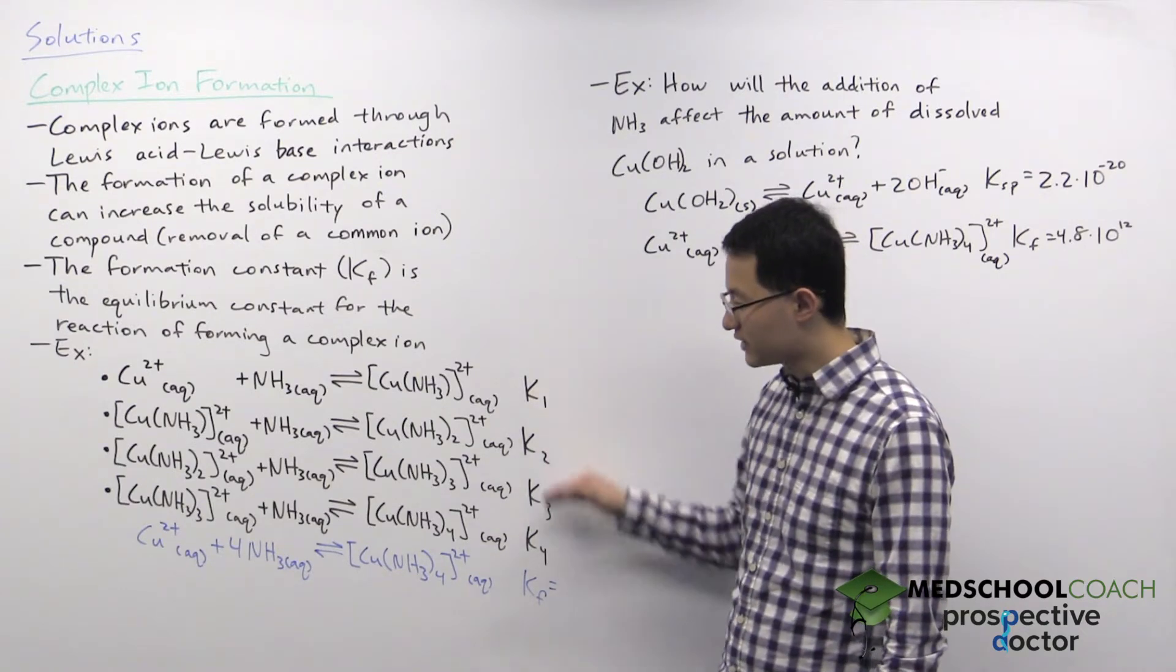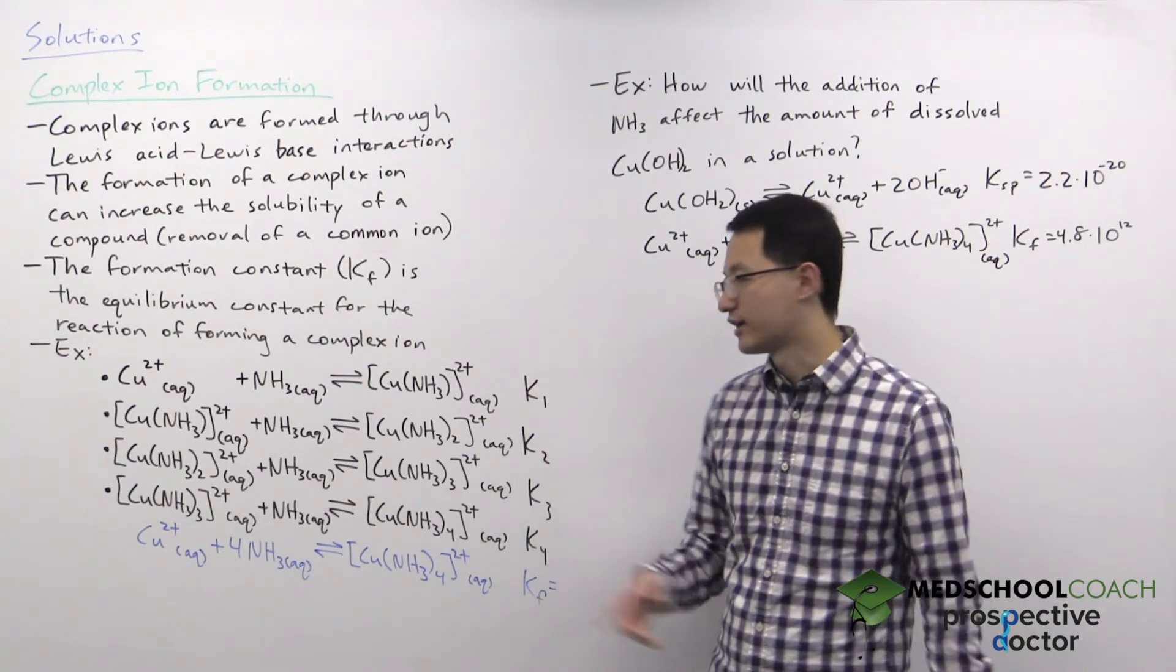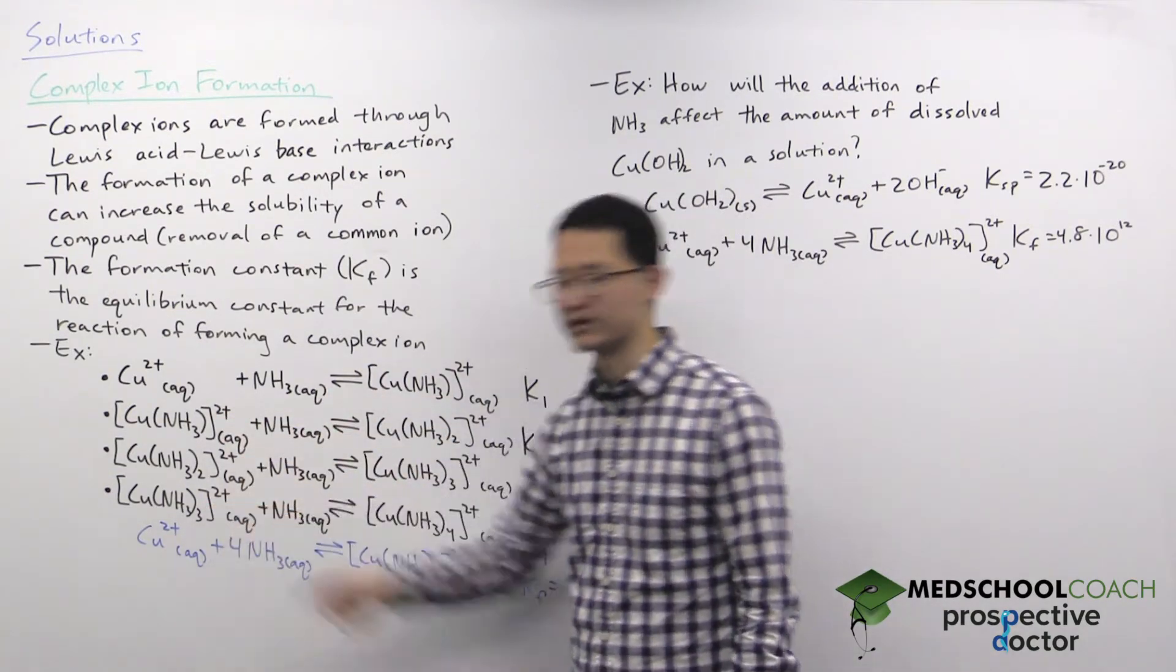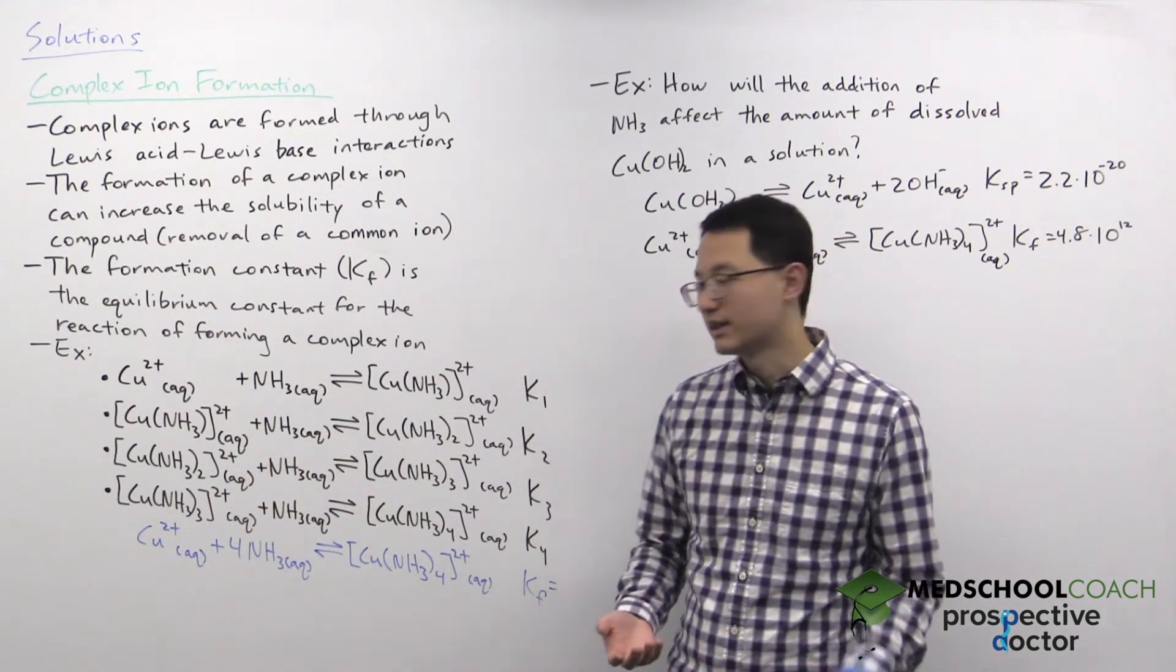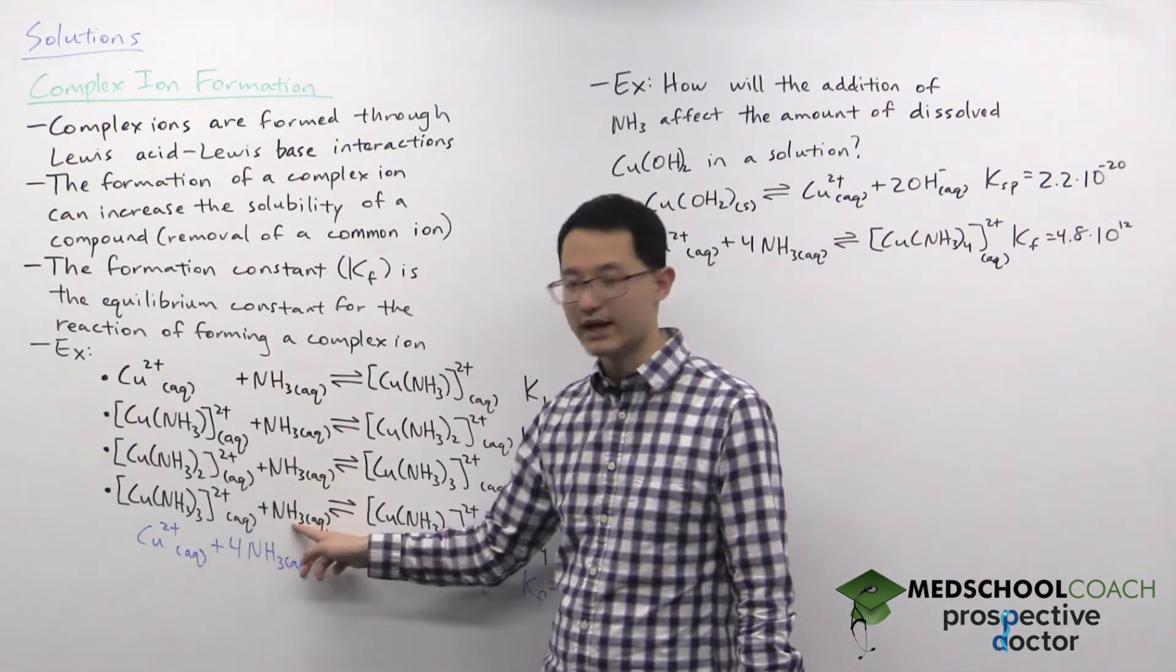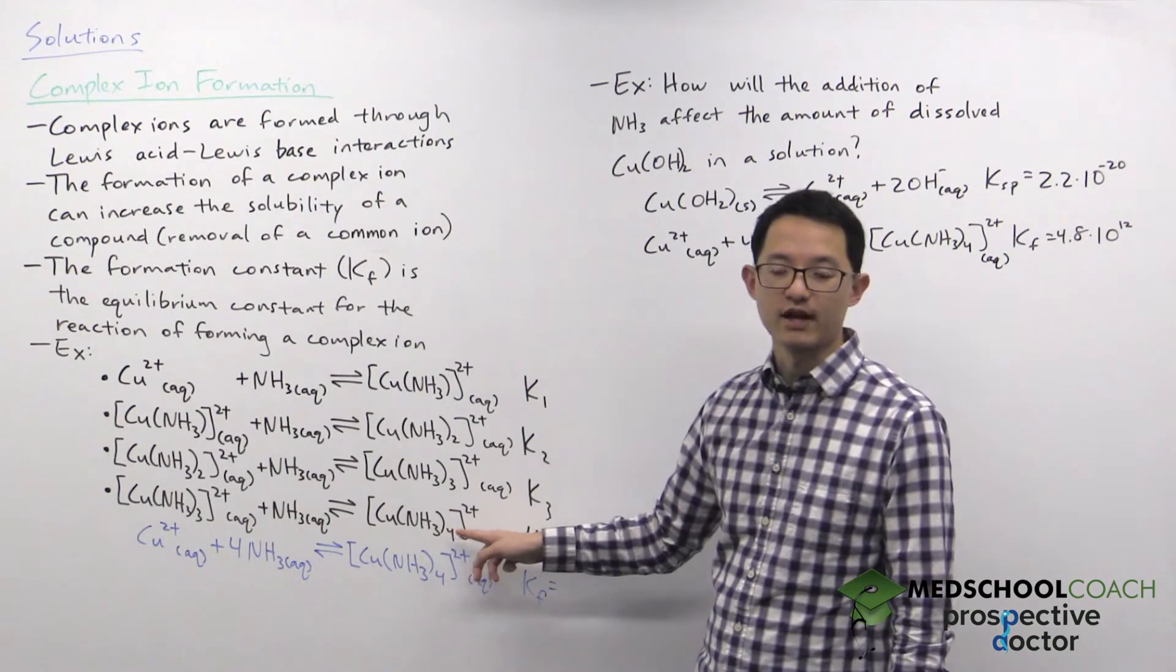When you add up these reactions a lot of the intermediate ions will cancel out on both sides, all these ions will cancel out. The only thing that's going to be left is copper plus four ammonia molecules on the left and the complex ion on the right.